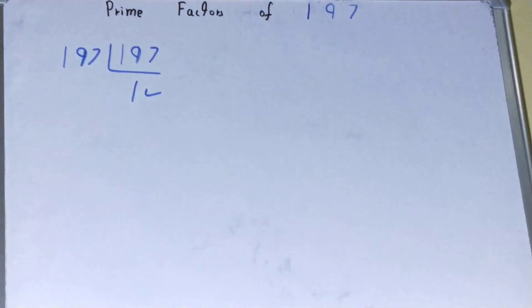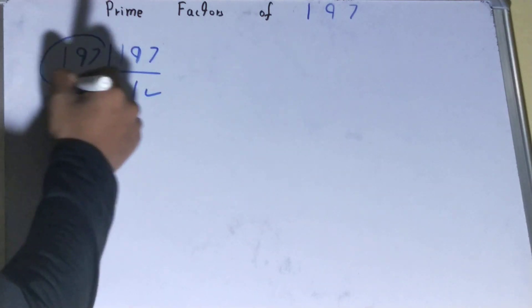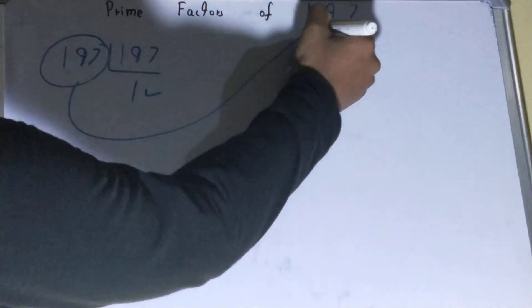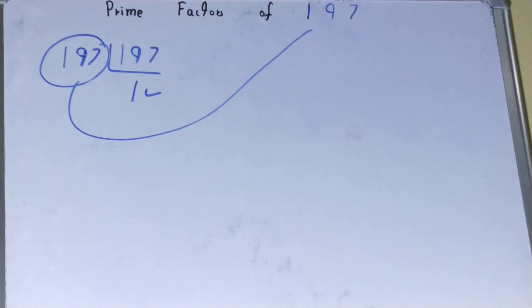And once you have one, your work is done. And whatever you have on the left hand side will be your set of prime factors for the number 197, that is 197 itself.